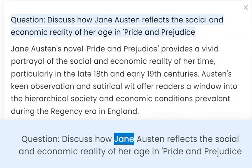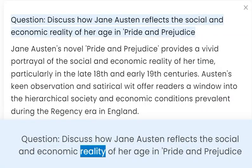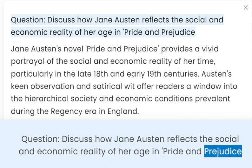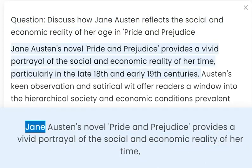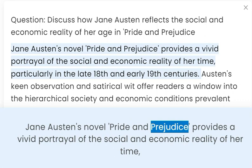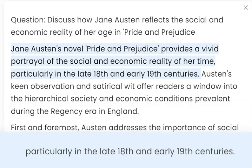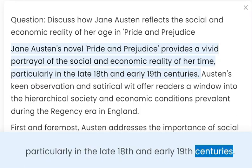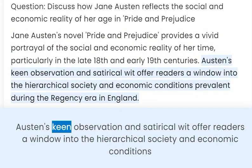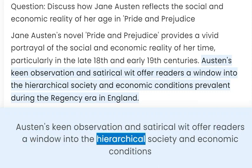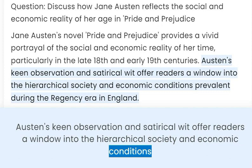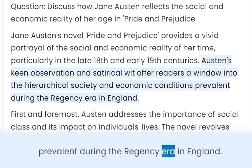Question: Discuss how Jane Austen reflects the social and economic reality of her age in Pride and Prejudice. Jane Austen's novel Pride and Prejudice provides a vivid portrayal of the social and economic reality of her time, particularly in the late 18th and early 19th centuries. Austen's keen observation and satirical wit offer readers a window into the hierarchical society and economic conditions prevalent during the Regency era in England.